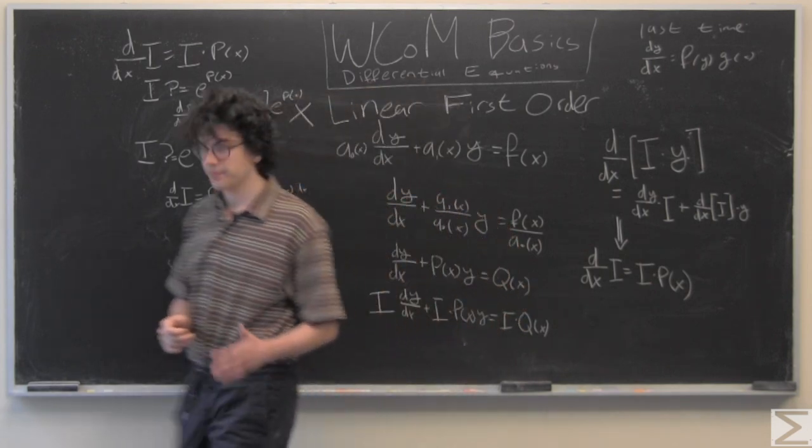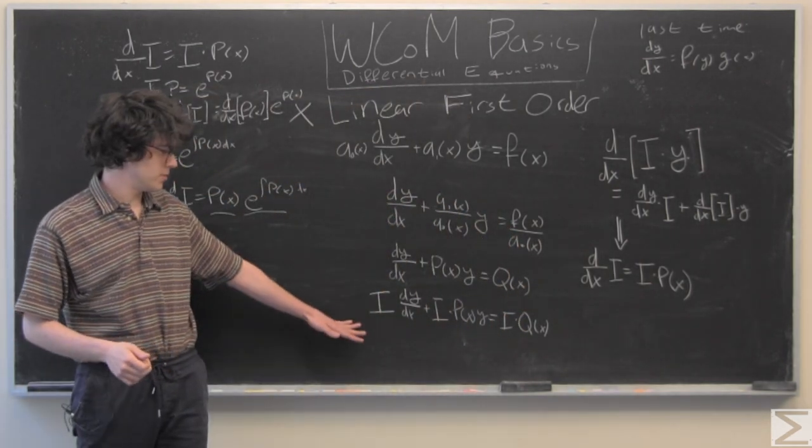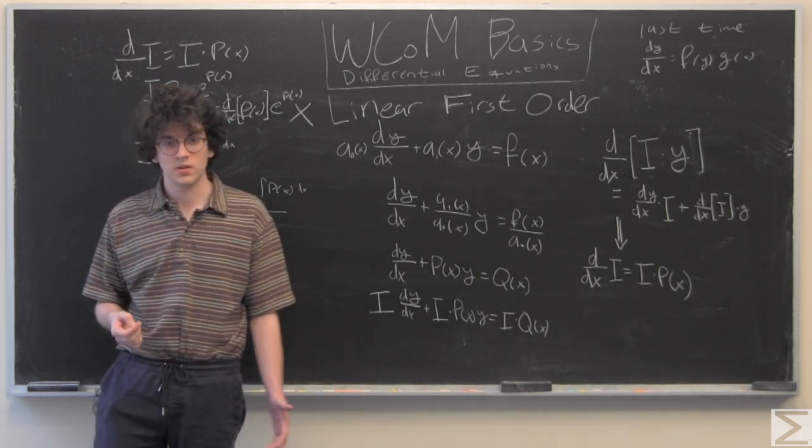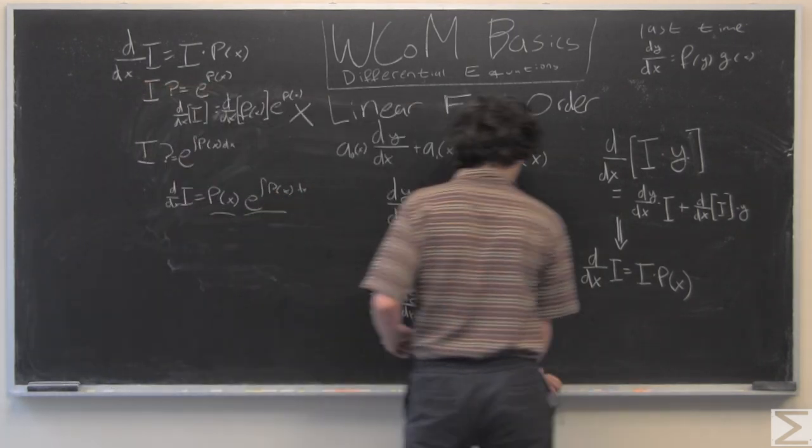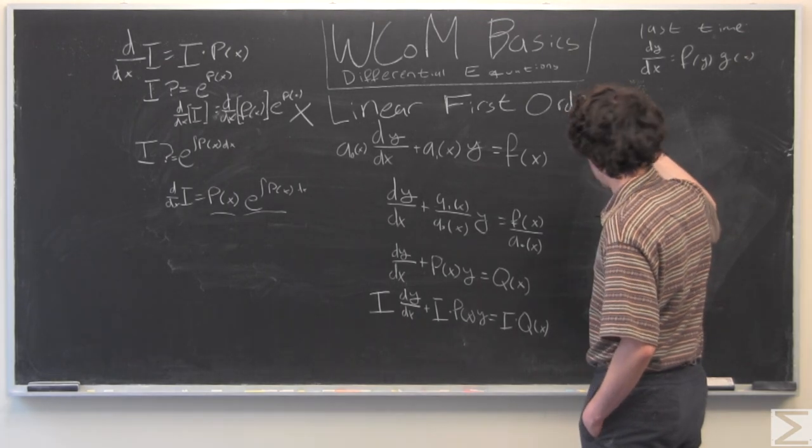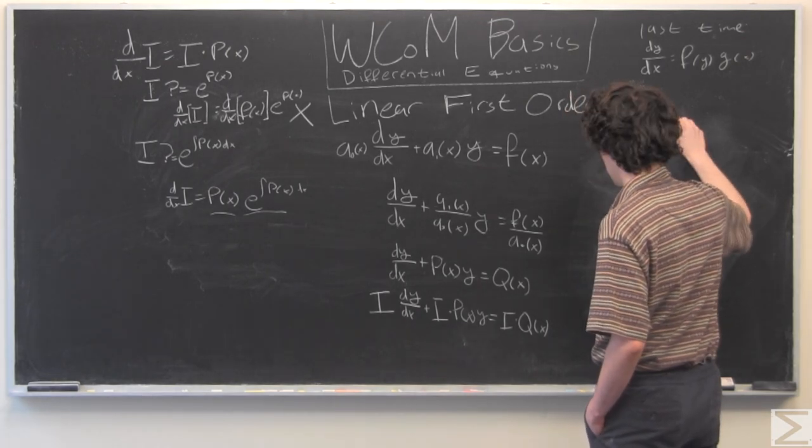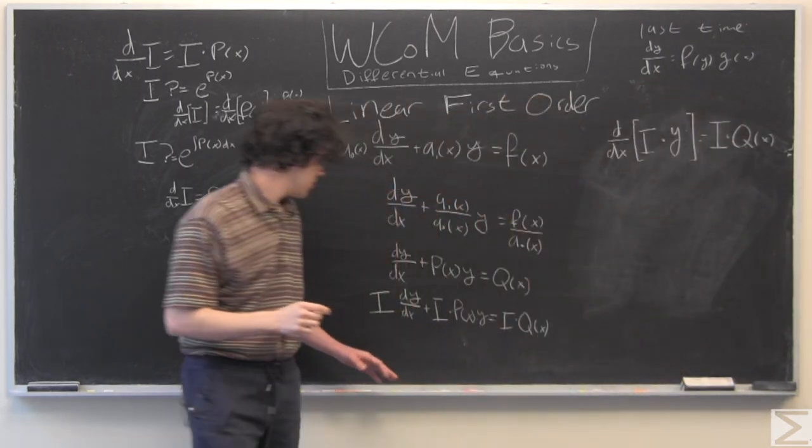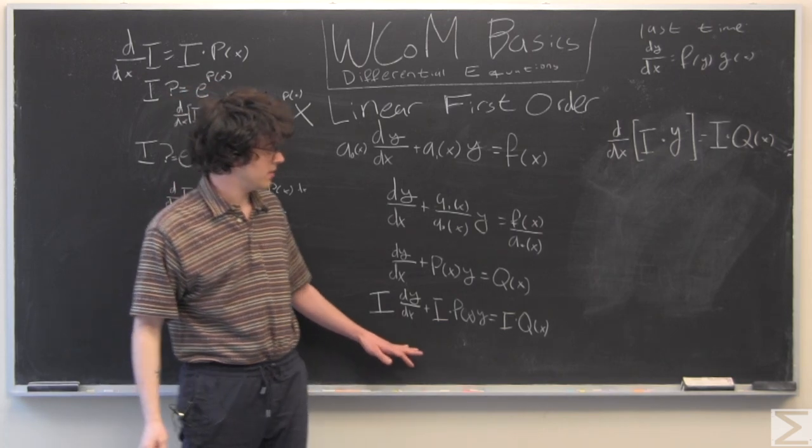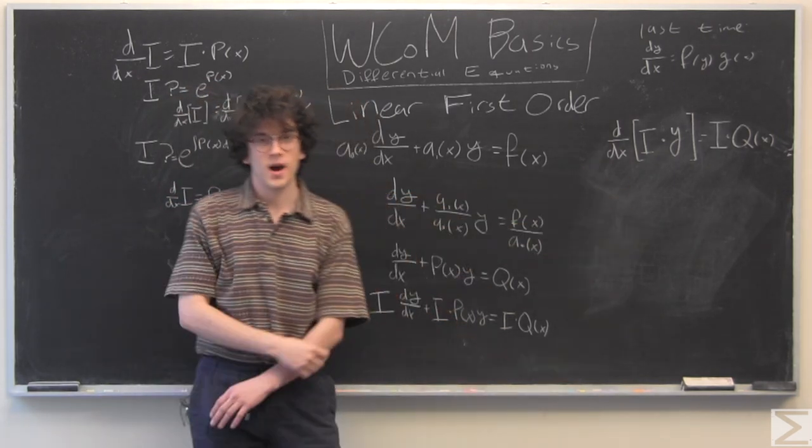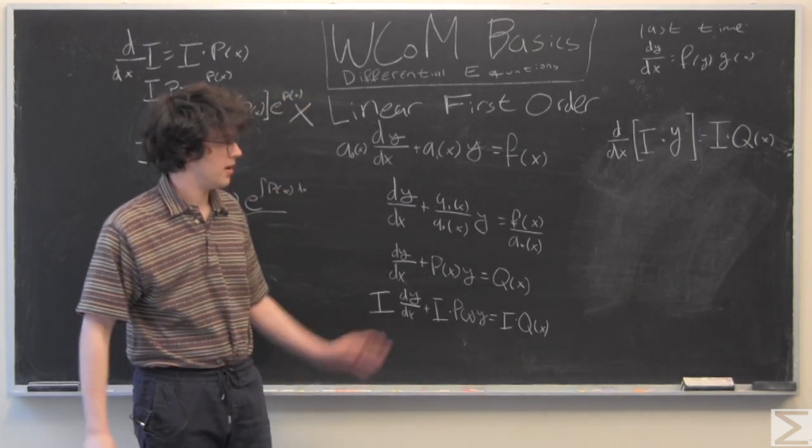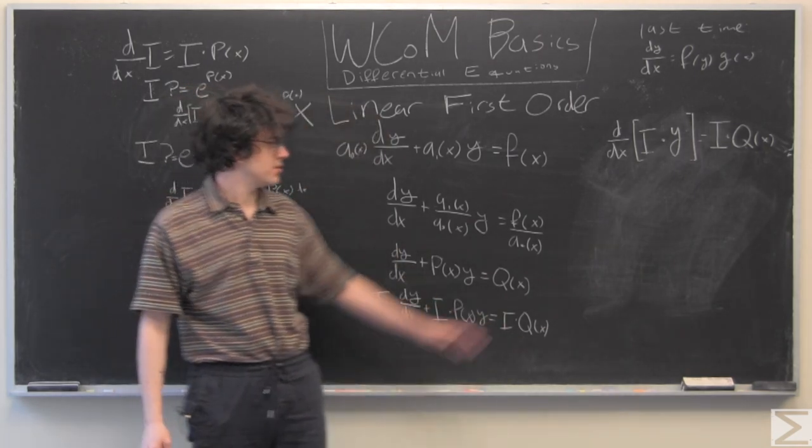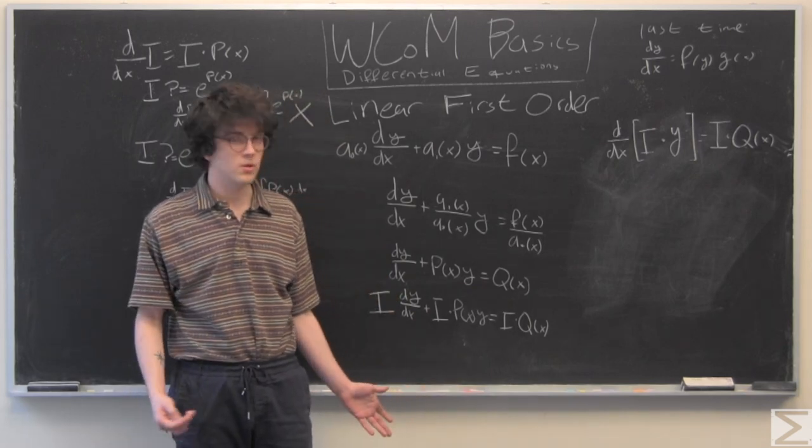So, now we're going to go back to our original equation and substitute what we know and see if that makes it easier to solve. So, from what we just did with the chain rule and everything, we have the derivative with respect to x of i times y is equal to i times q of x. This has not changed with anything we've done. And, maybe I shouldn't have erased this, but maybe you're taking notes.